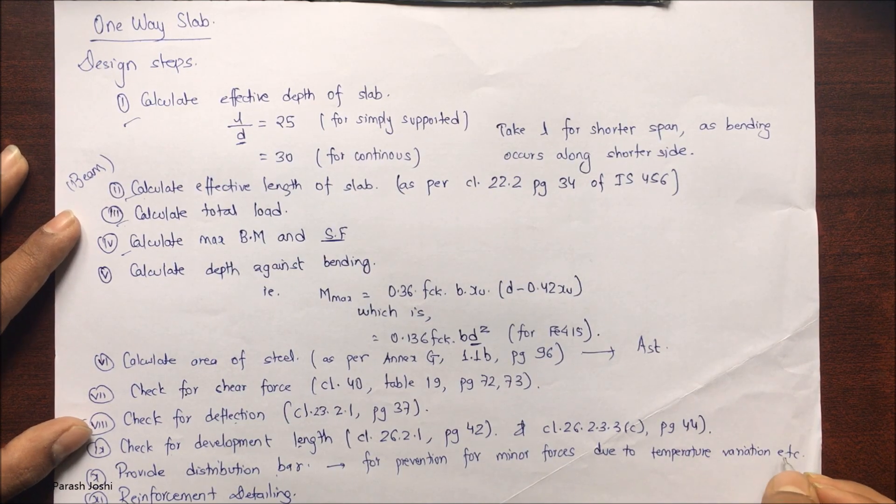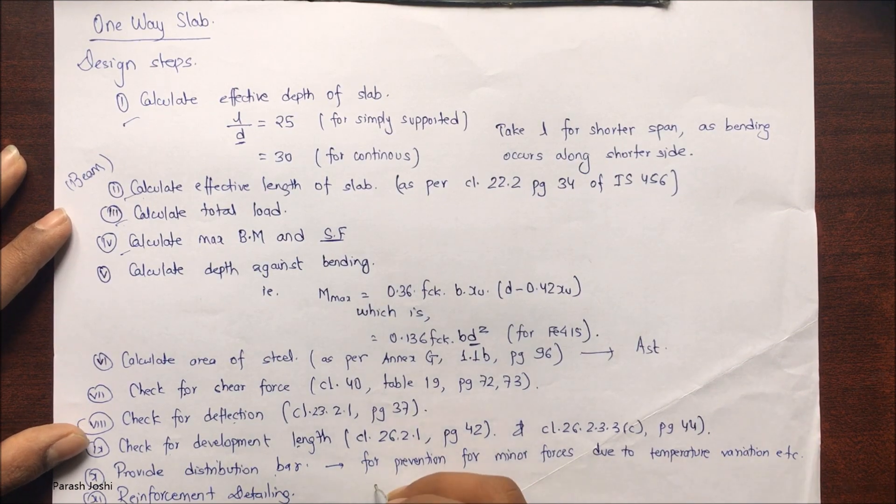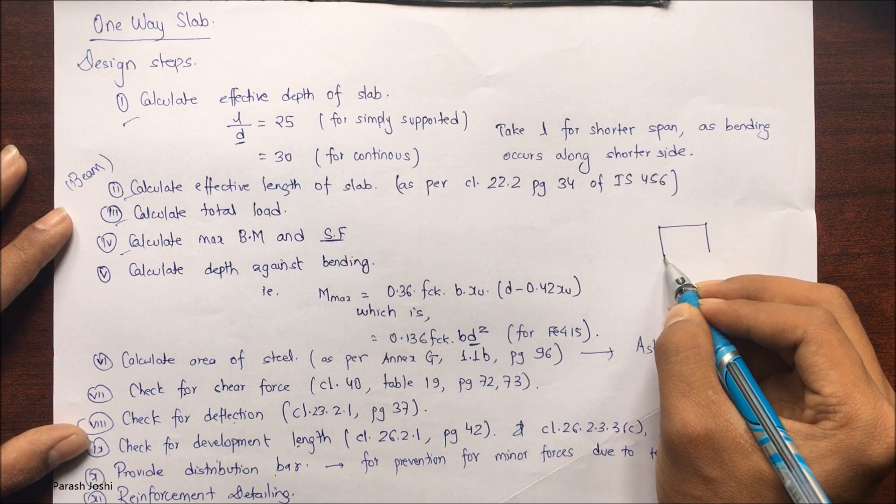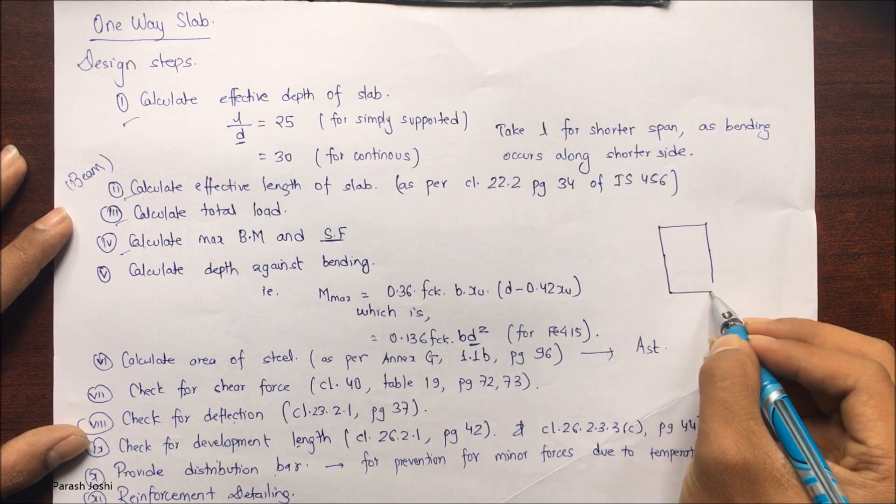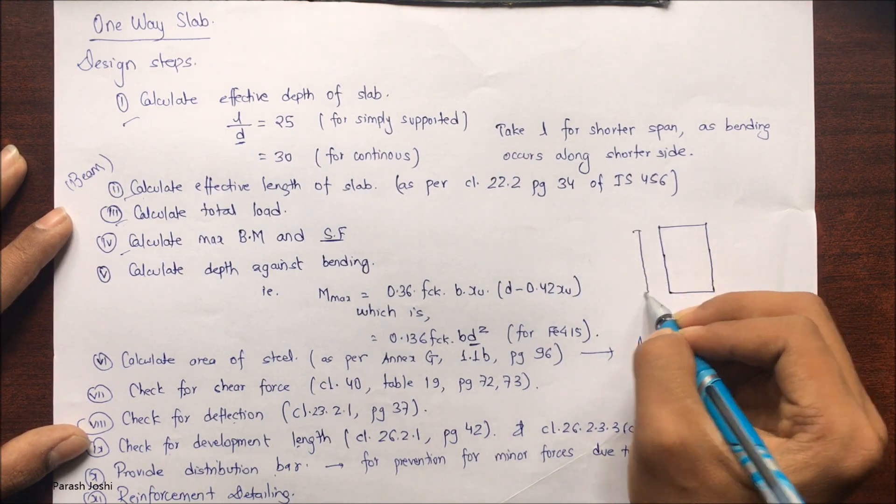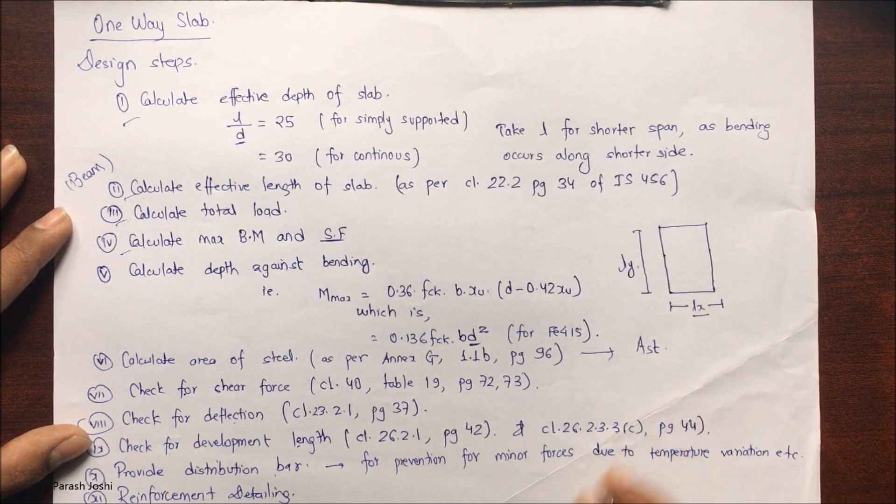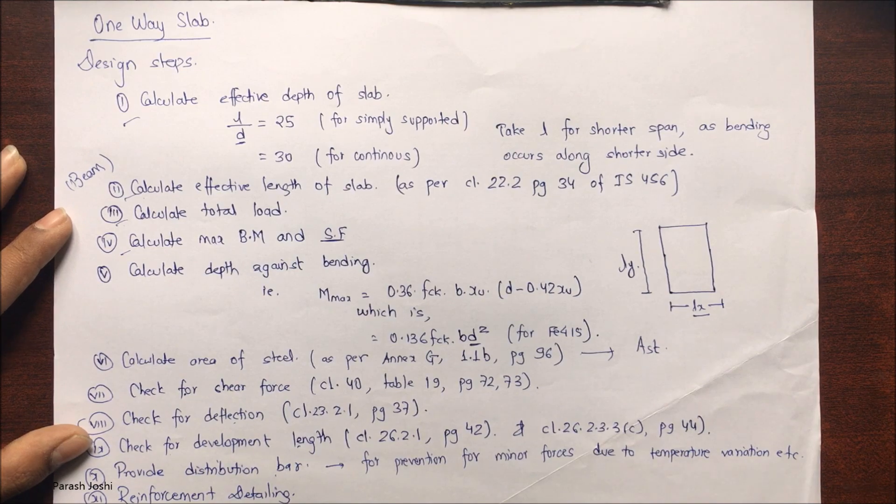Make sure you understand this point. This is a section of a slab, but we will consider Lx and Ly. Lx is the shorter side, so you have to provide main bar along the shorter side.